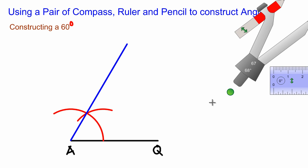If you should measure that angle, you would get an angle of 60 degrees. So that's it - that's how easy you construct a 60-degree angle.